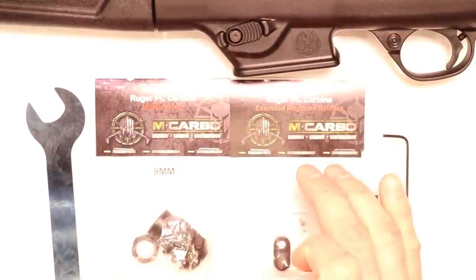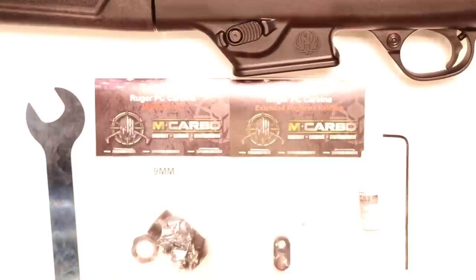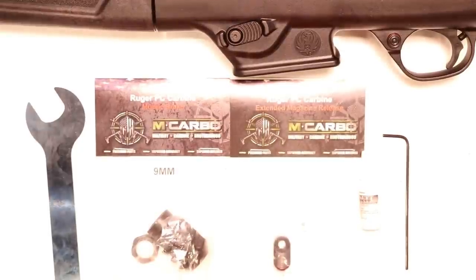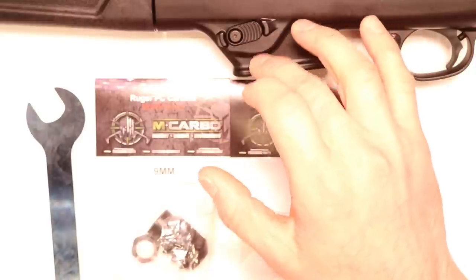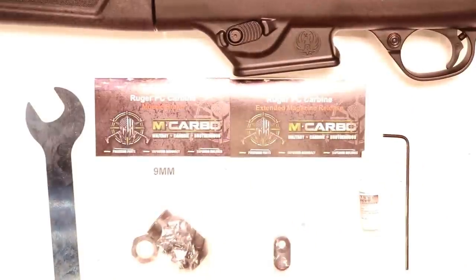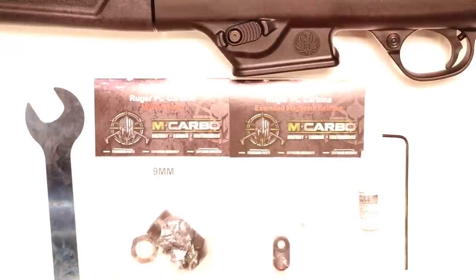We've also got the Ruger PC Carbine extended magazine release. This is 6061 aircraft grade aluminum. Phenomenal replacement. It's going to give you a more premium material. This is plastic. It's also going to give you that height extension which makes it much easier to release that magazine, when you intend to of course, and drop the mag.